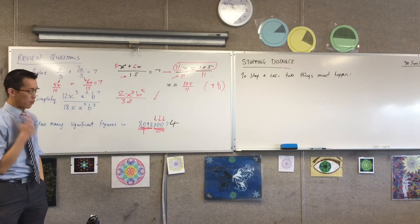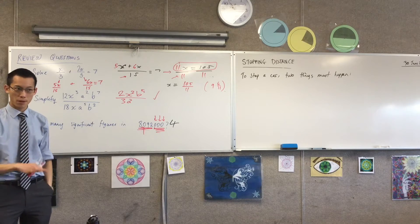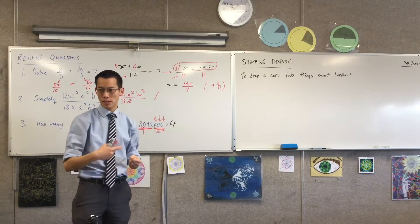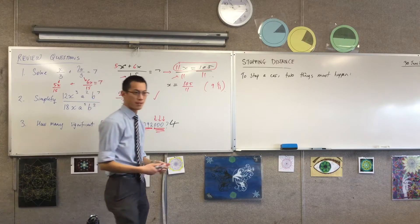Our two things, two important mathematical things have to happen in order for a car to stop, right? So you're on the road, you're at the wheel, and something happens up in the distance which you realize you need to stop. So what two things have to happen? Any suggestions?